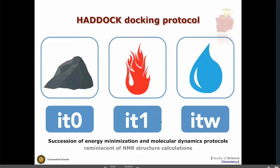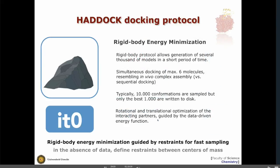The docking protocol has three stages. In the first stage, called IT0, the molecules are treated as rigid solids — rigid docking. In the second phase, we heat up the system using a simulated annealing protocol to introduce flexibility. In the final stage, we refine the solution in explicit solvent, adding a shell of water on the complexes and performing a gentle, short refinement. In the first stage, typically you generate a large number of models; the default settings sample around 10,000 conformations and write 1,000 to disk.